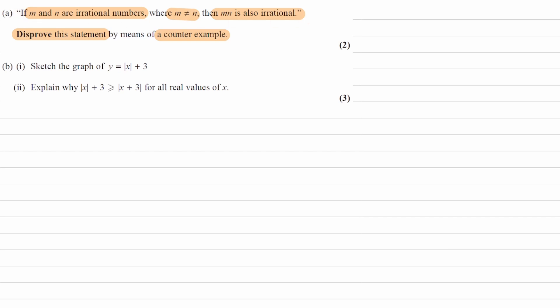So what is the statement saying? First of all, if m and n are irrational numbers — let's talk about what an irrational number is. A rational number is one which can be expressed as a simplified fraction of integers. Regular integers like 5, 3, or 25 can all be expressed as a simplified fraction of integers, and therefore they are rational.